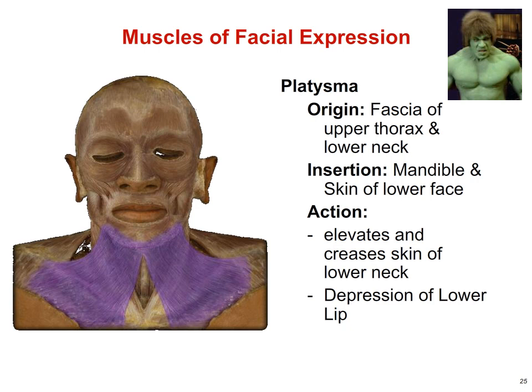Probably one of my favorite muscles for facial expression is the platysma. The platysma is a very superficial muscle located just deep to the skin. Its origin is the fascia on the upper thorax and lower neck, and the insertion is the mandible and skin of the lower face. When contracted, it elevates and creases the skin of the lower neck and depresses the lower lip. You can see this in old Incredible Hulk episodes — the creases in Lou Ferrigno's neck when he gets angry are caused by the contraction of the platysma.